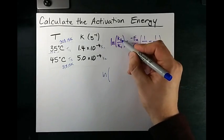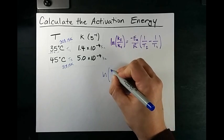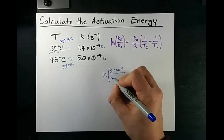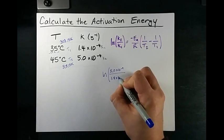The natural log of K2, which I've labeled as 5.0 times 10 to the negative 4, over K1, which is 1.4 times 10 to the negative 4,